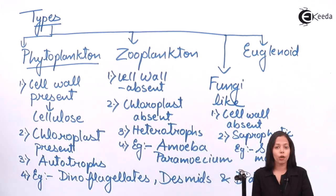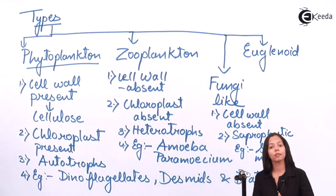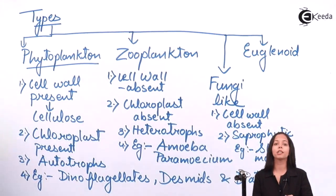Now euglenoids. There is only one organism on earth capable of both being autotrophic and heterotrophic. This organism can prepare their own food in presence of light, and when light is not available, they can get their food from another organism. They are very unique and there is only one organism: euglena.